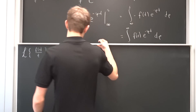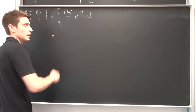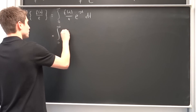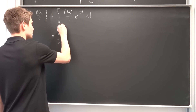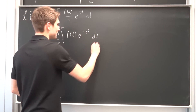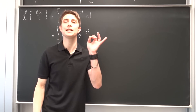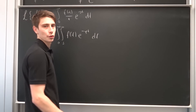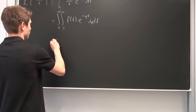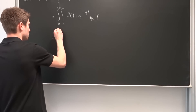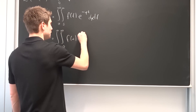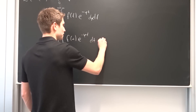It doesn't look much simpler because we are getting a double integral now. So that's the integral from 0 to infinity of the integral from s to infinity of f(t) e to the minus φt dφ, dt. And now we are going to use Fubini's theorem to switch around the order of integration — and don't forget your dφ.